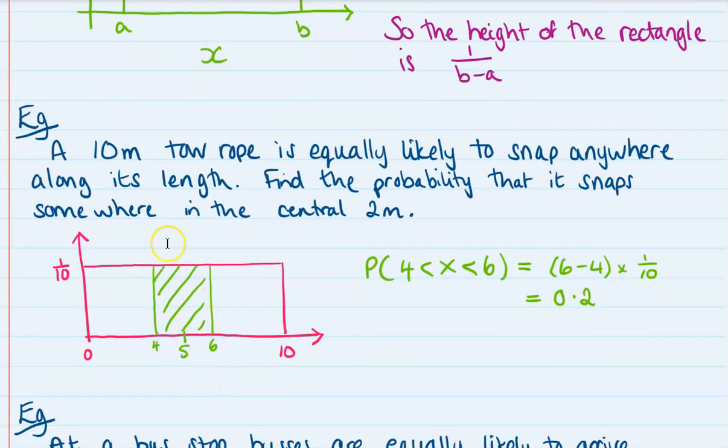So here's our picture. We've got a length from zero up to 10. The middle two meters would be from four to six, so we find the area of that space there. Now if the base is 10, then the height must be one tenth so that the full rectangle makes one.